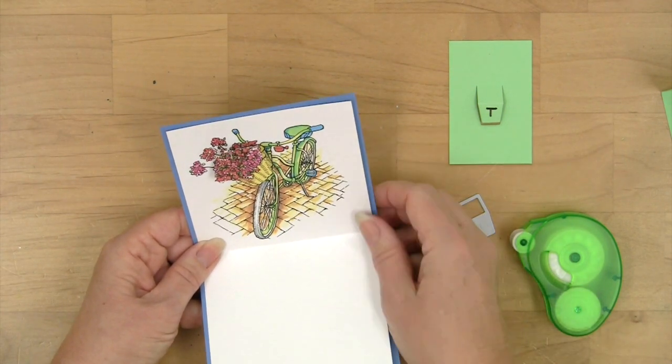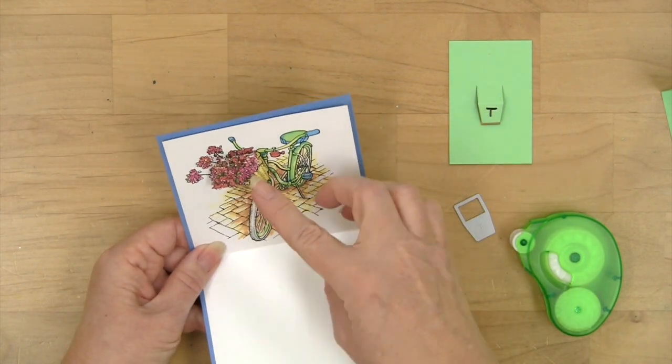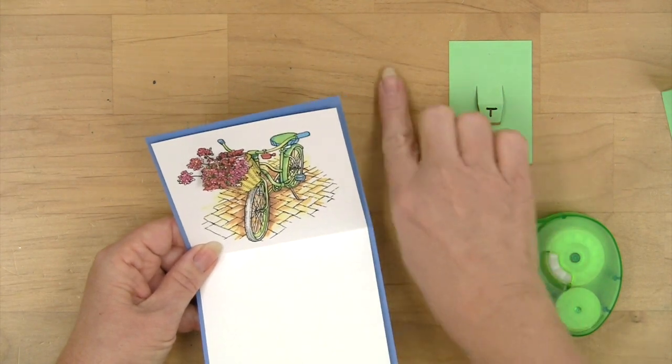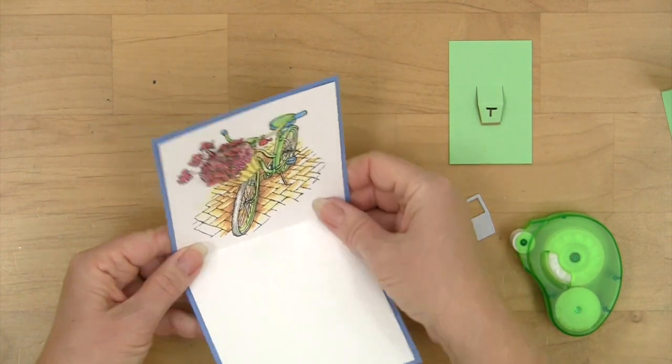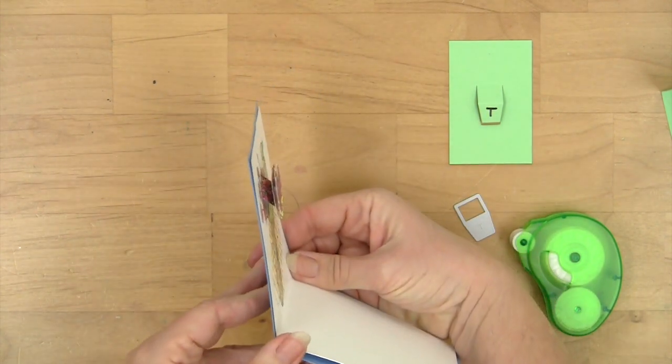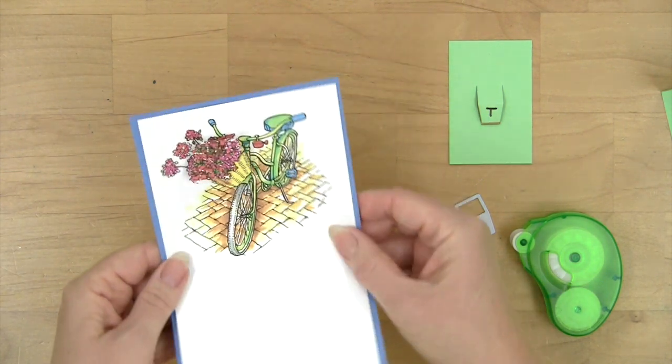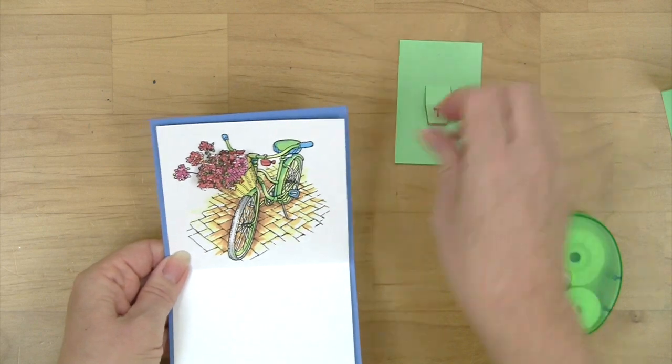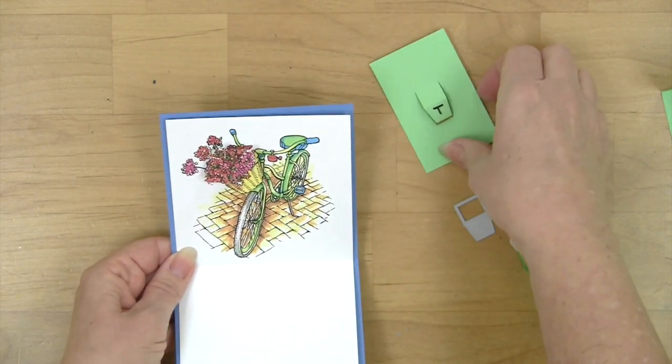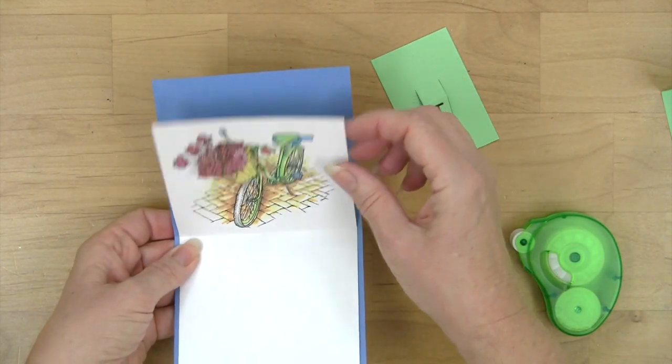So that way you can color just the elements that you need to really create a nice three-dimensional little pop-up card. And there if you can see from the side that's just using the little tab at an angle to work that way.